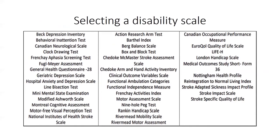There are various evaluation scales for post-stroke individuals found in the literature. Some familiar names include the Beck Depression Inventory, the Geriatric Depression Scale, the Mini Mental State Examination, the Barthel Index, the Functional Independence Measure, and quality of life scales.